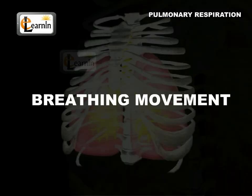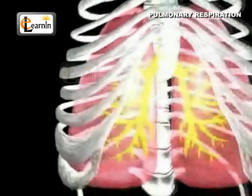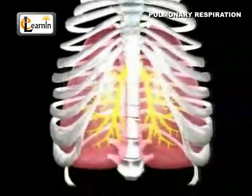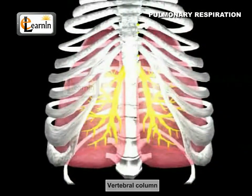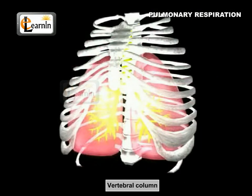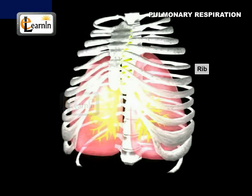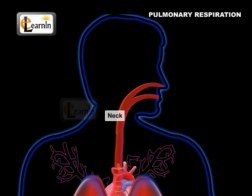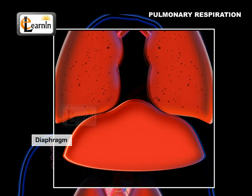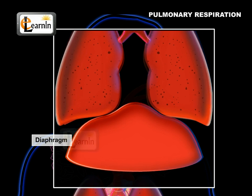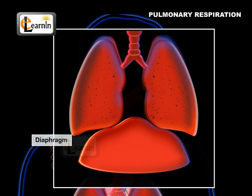Breathing Movement. The thoracic cavity is an airtight chamber which is enclosed dorsally by the vertebral column, ventrally by the sternum, laterally by the ribs, anteriorly by the neck, and posteriorly by the diaphragm. The diaphragm is a dome-shaped partition of skeletal muscle in between the thoracic cavity and abdominal cavity.